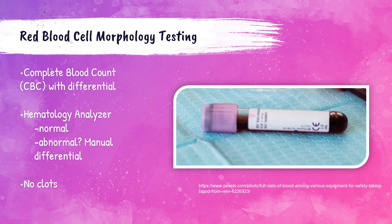The smear gets stained with a Wright-Giemsa stain, and then it's looked at under the microscope by a laboratory professional. The CBC is going to give red blood cell indices: MCV, MCH, MCHC, and RDW. I've created a separate video on what those are and how to calculate those indices, so please check that out — I will link it in the description of this video.